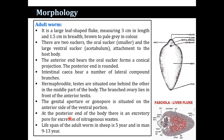What is the morphology of Fasciola hepatica? It is a large leaf-shaped fluke, measuring three centimeters in length and 1.5 centimeters in breadth. The color is brown to pale gray. There are two suckers: an oral sucker, which is the smaller sucker, and a large ventral sucker also known as the acetabulum.